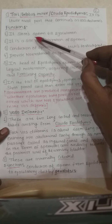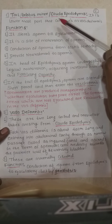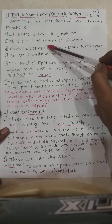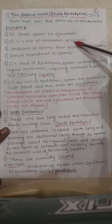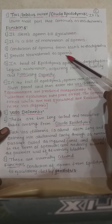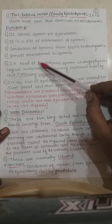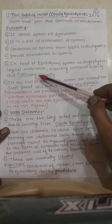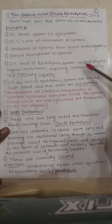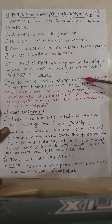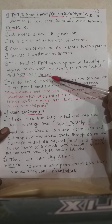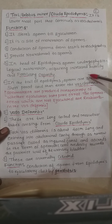Functions of the epididymis: it stores sperm till ejaculation and is the site of maturation of sperm. It conducts sperm from the testes to the vasa differentia and provides nourishment to sperm. In the head region, sperms undergo physiological maturation, acquiring increased motility and fertilizing capacity. In the tail, sperms are stored for a short period before entering the vasa differentia.